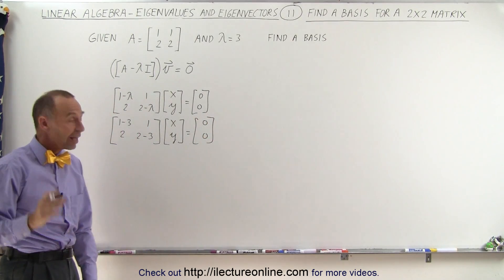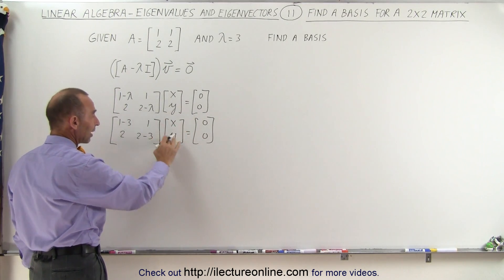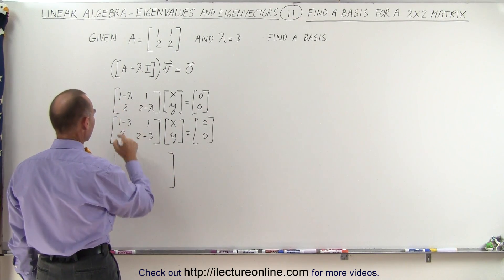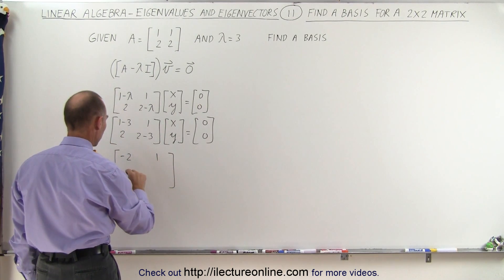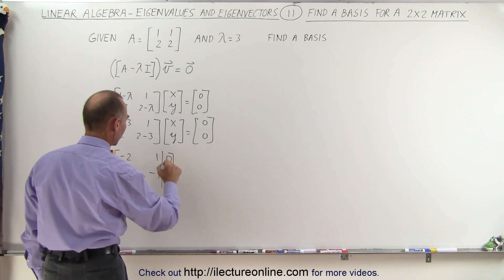And then finally, to find the values of x and y, because that's what we need to do to find this vector, we can use the augmented matrix format, so 1 minus 3 is minus 2, 1, 2, and minus 1, and we have to augment that with 0 and 0.